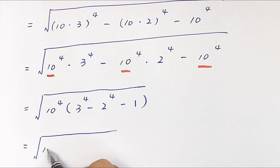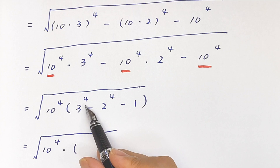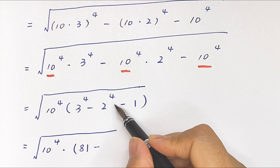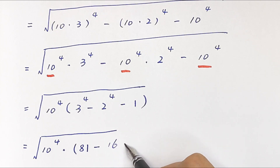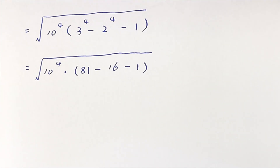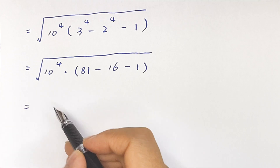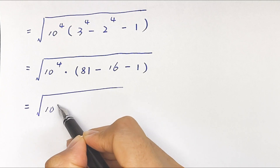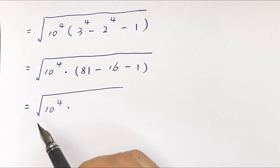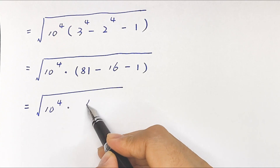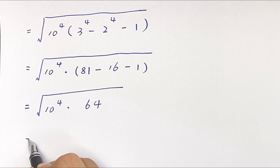Equals square root of 10 to the power of 4 times: 3 to the power of 4 is 81, minus 2 to the power of 4 is 16, minus 1. It will be equal to square root of 10 to the power of 4 times 64, since 81 minus 16 minus 1 equals 64.